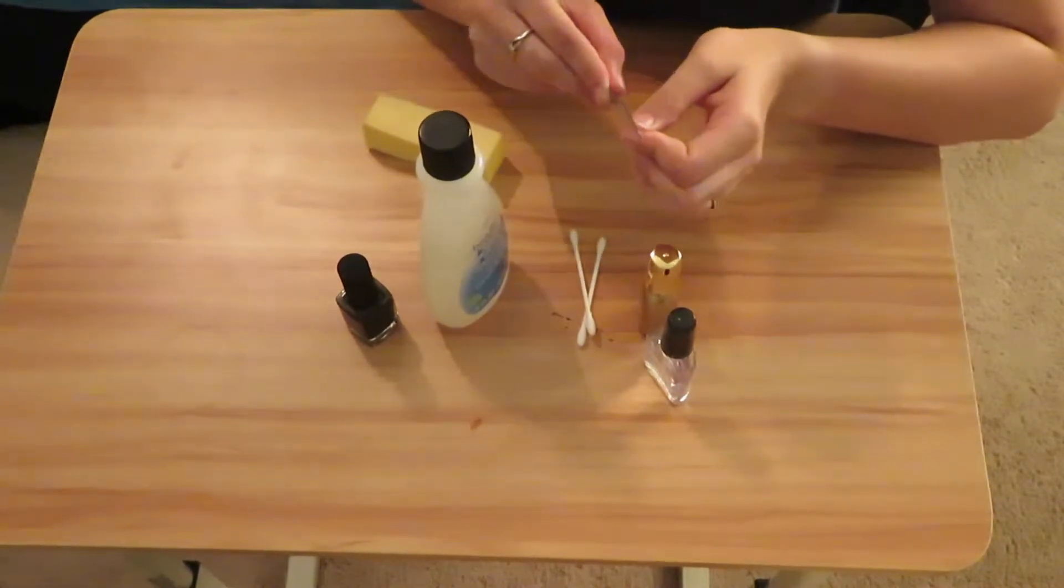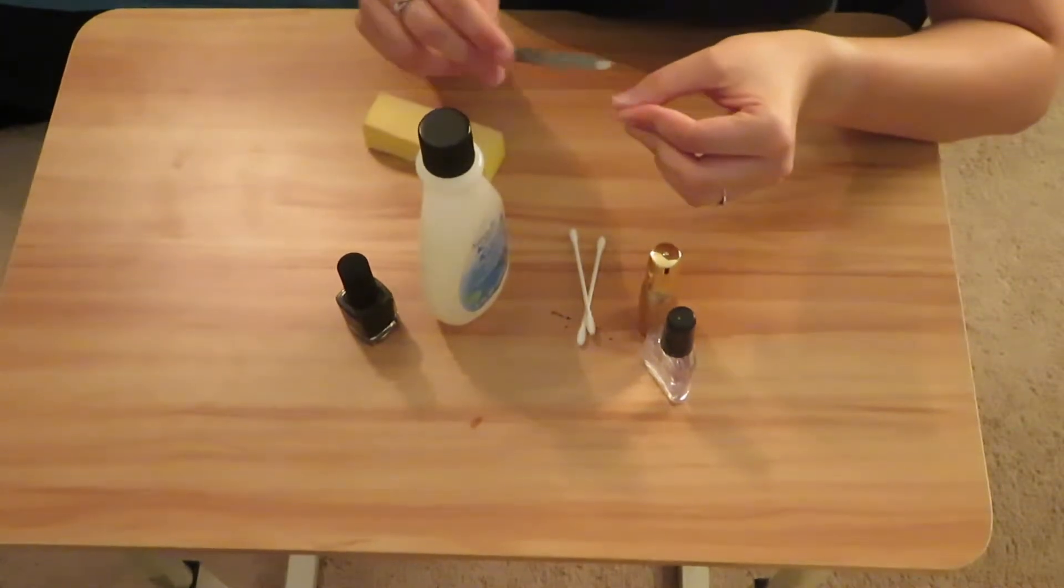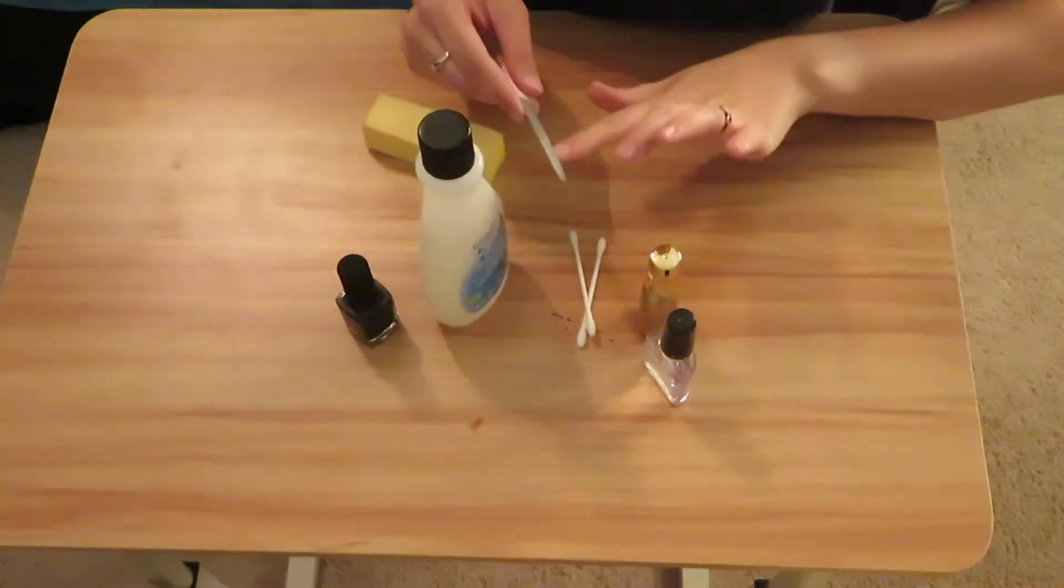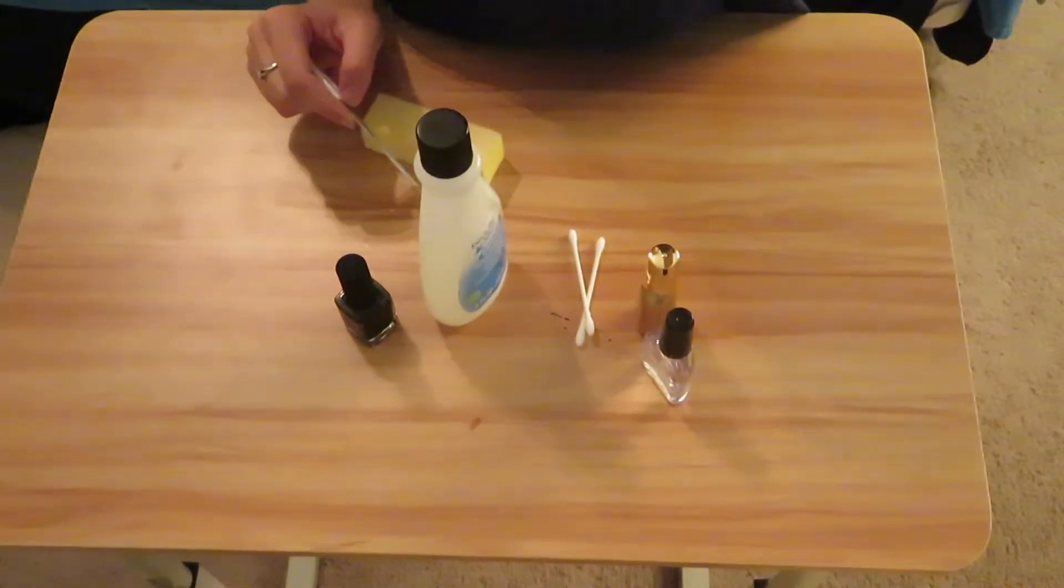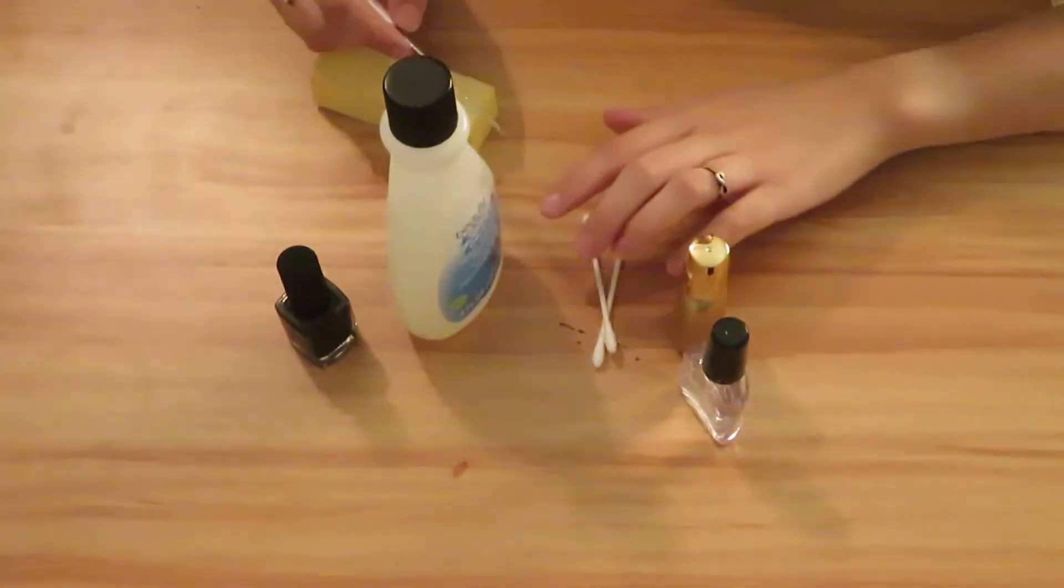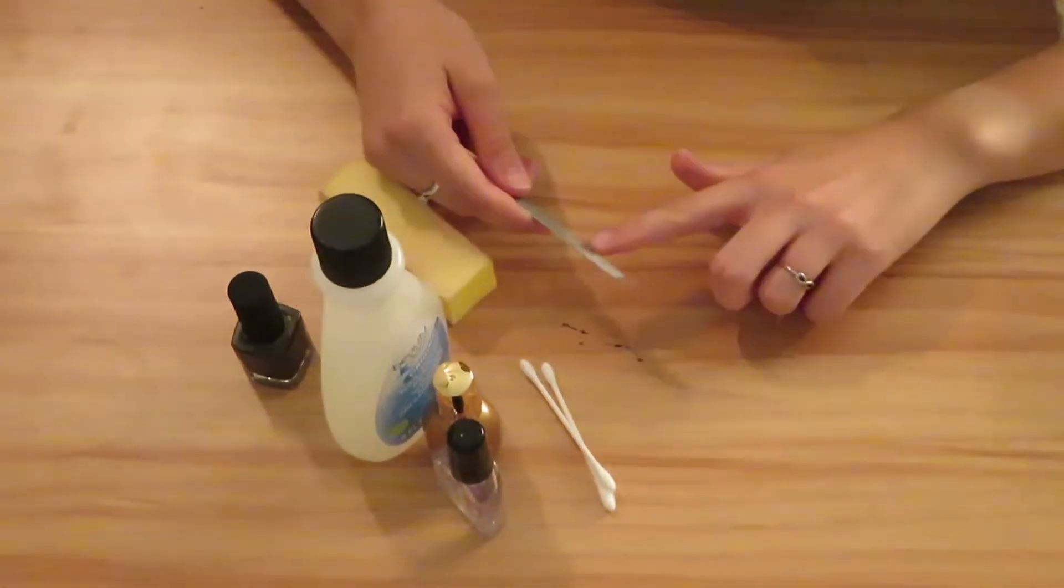And basically I just use the rougher side of that yellow file at first and then I go in with the smooth side to make the nail completely smooth. I like to do this so that the polish has a nice even base to go down on. So I'm just going to fast forward you through the filing process.